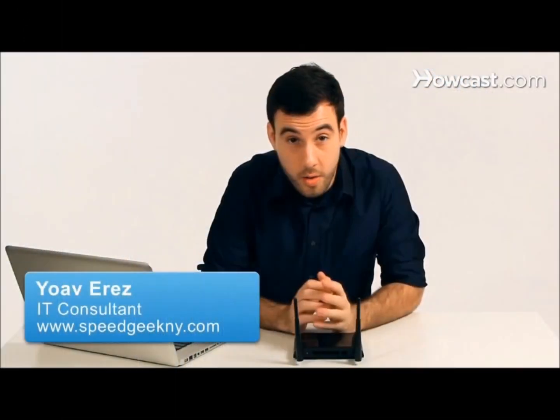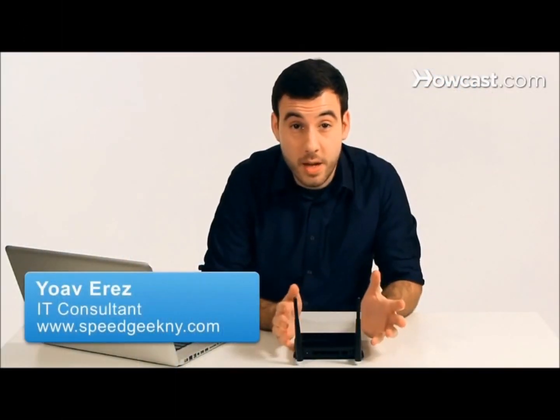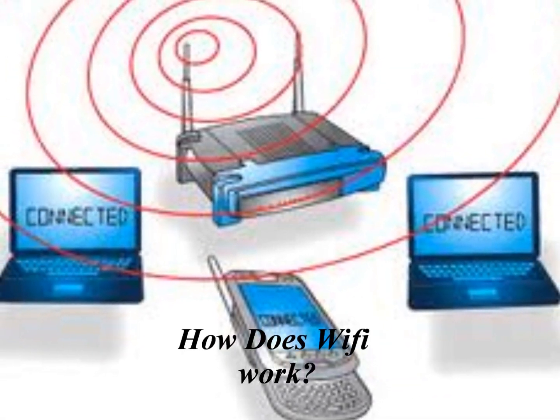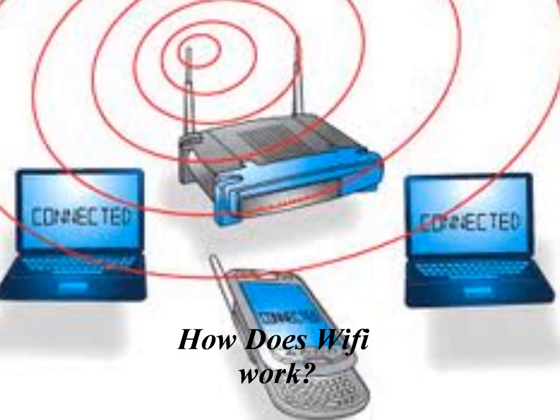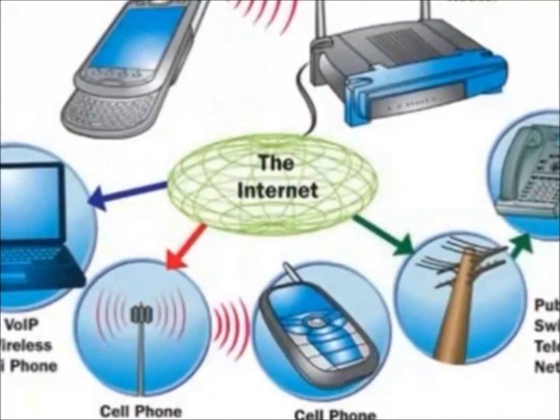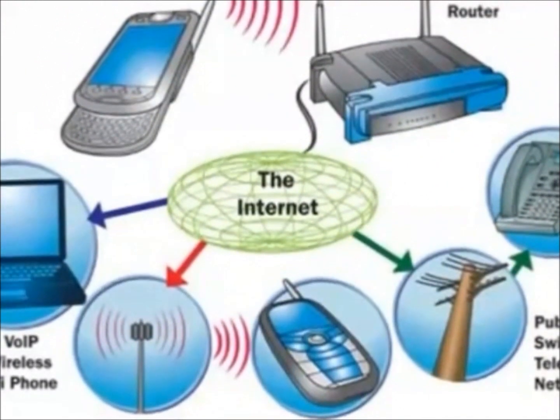When people say Wi-Fi, or wireless fidelity, what they usually mean is wireless internet. Wireless internet is how we access the internet using our computers when we don't want to attach a cable to them. A wireless network uses radio waves, just like cell phones, televisions, and radios do.